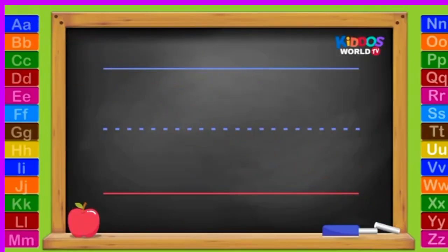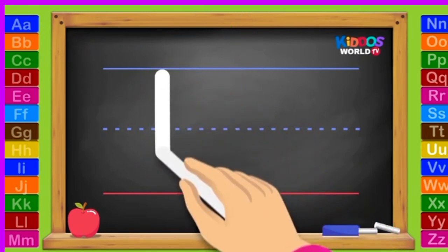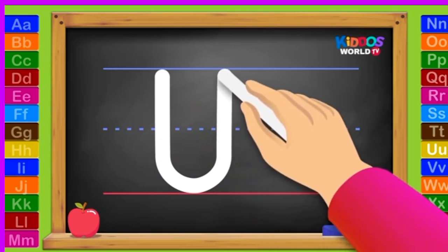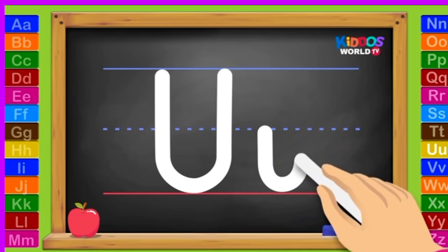Let's move on to the next letter. The letter U. Uppercase U. Pull down, around, and pull up. Lowercase U. Pull down, around, up.